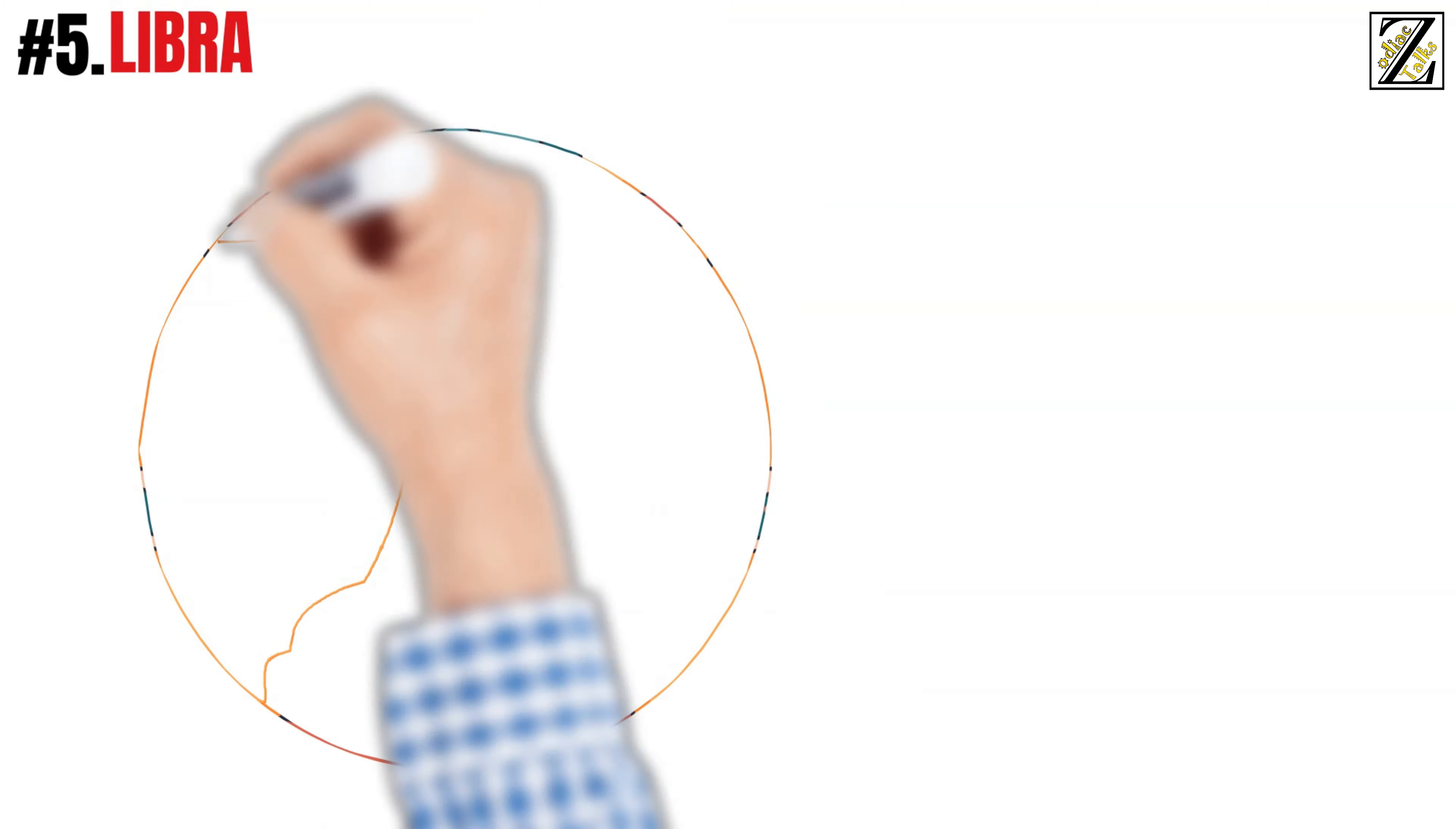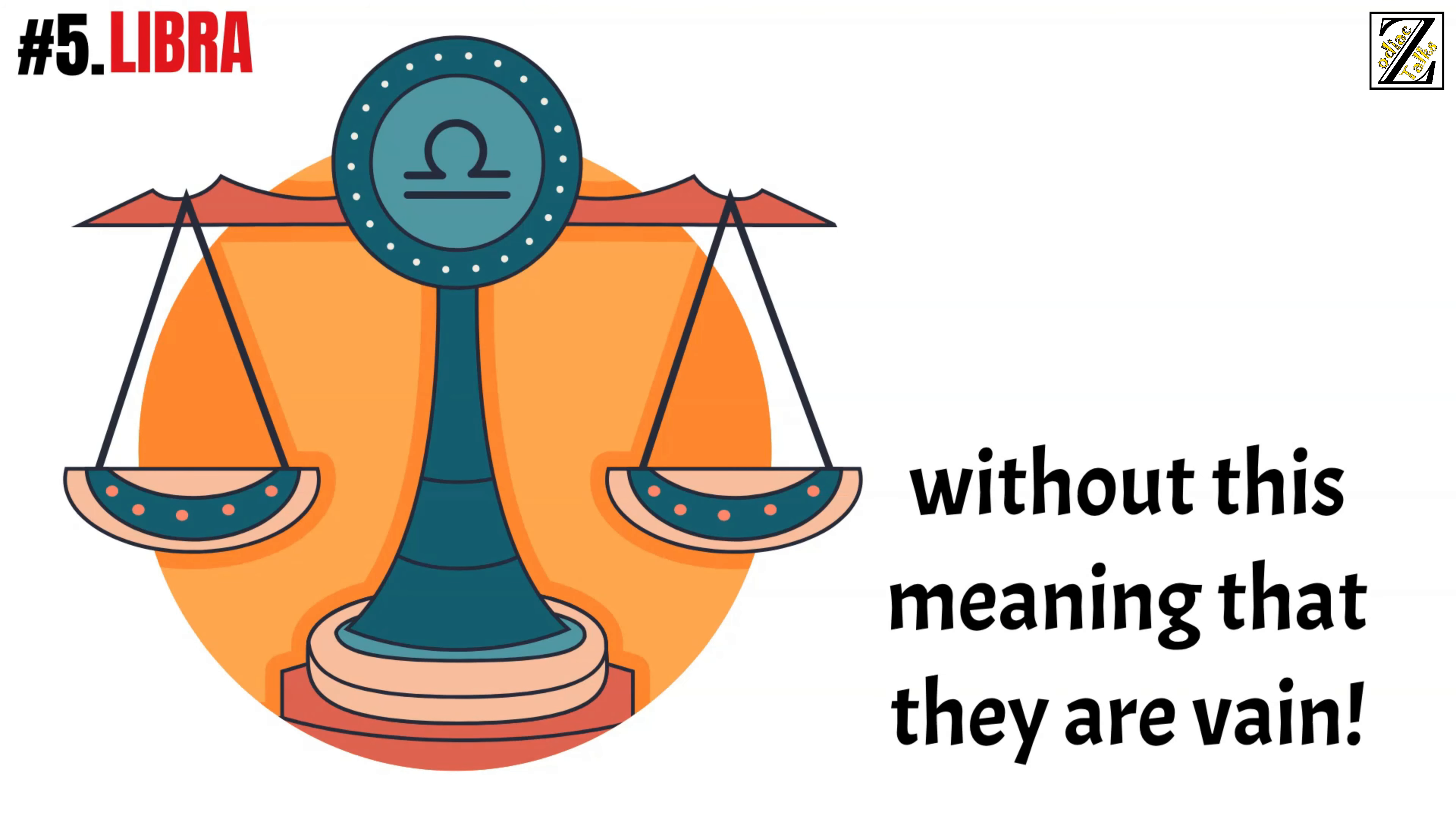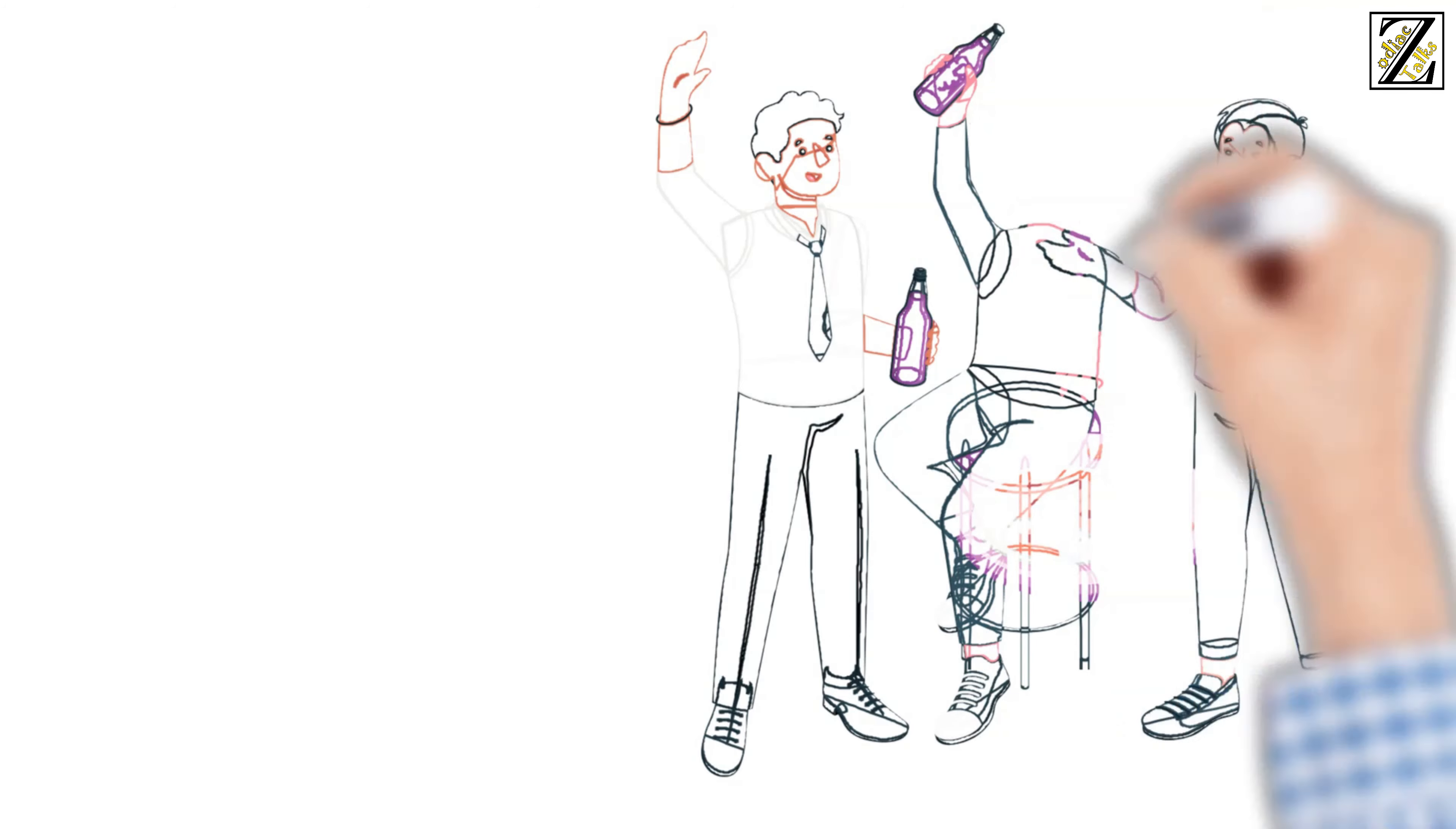Number five, Libra. Librans thrive on looking nice and going out for a lovely time. They tend to spend a lot of money on their appearance and social occasions, without this meaning that they're vain.